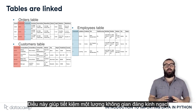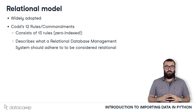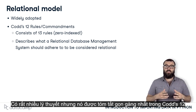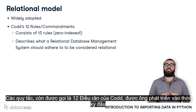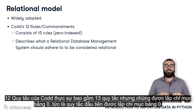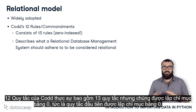You merely need to look it up in the Customers table. This saves an incredible amount of space. The relational model was originally proposed by Ted Codd and has been widely adopted. There's a great deal to the theory, but it's most neatly summarised in Codd's 12 Rules, also known as Codd's 12 Commandments, which he developed in the early 1980s to combat what he viewed as a dilution of his original relational database vision. Codd's 12 rules actually consist of 13 rules, but they're zero-indexed — that is, the first rule is labelled zero.